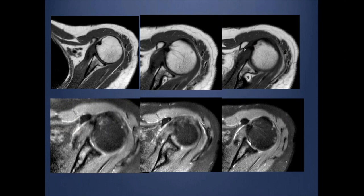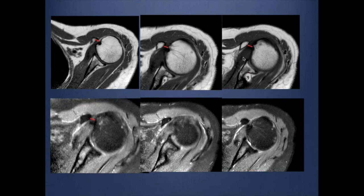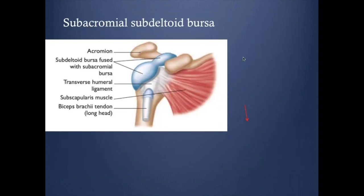One thing I want to touch on is the distance or interval between the humeral head and the coracoid. This can result in what we call sub-coracoid impingement, which primarily affects the subscapularis tendon. The distance between the coracoid and the humeral head should be at least 1.2 cm. If it is narrower than this, it can impinge on the subscapularis tendon and result in chronic tendinopathy and tear. As you can see here, it is definitely narrowed with significant thickening of the tendon — this is sub-coracoid impingement.